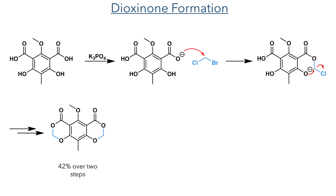These carboxylic acids then took part in the formation of two dioxinone rings. They were first deprotonated by potassium phosphate, and then underwent a nucleophilic addition to bromochloromethane. The resulting intermediate rapidly undergoes an intramolecular nucleophilic attack, eliminating the chloride to form the bis-dioxinone with a 42% yield over two steps.